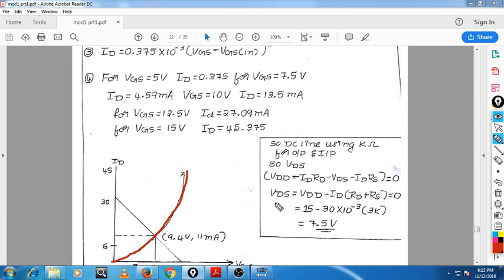Now using DC load line method, we will write the DC load line equation using Kirchhoff's voltage law. This is the DC load line equation for the output: VDD minus ID times RD minus VDS minus ID times RS. I will rewrite this as VDD minus ID times (RD plus RS). Since we know the value of RD and RS, you will get VDS equal to 7.5V.